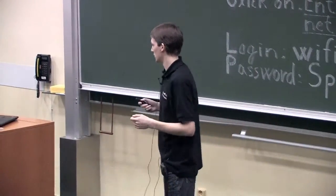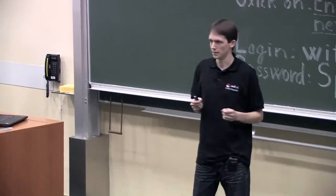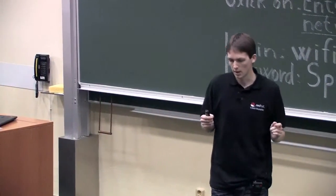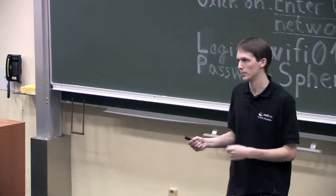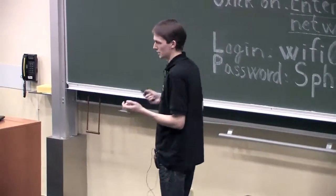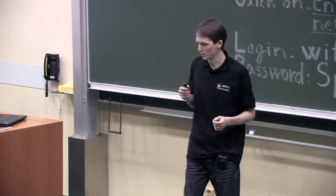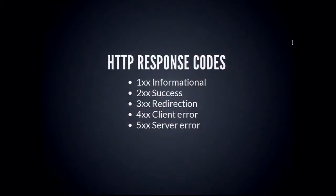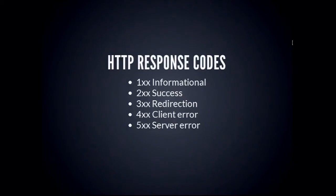Let's look at response codes first. They are useful for communicating how your request went — was it a success or a failure, and perhaps some detail about why it failed. Success versus error is the main use. There are a lot of them and we don't have enough time to go through all the important ones, but I'll show the most common ones to give you an idea of the kind of information response codes carry.